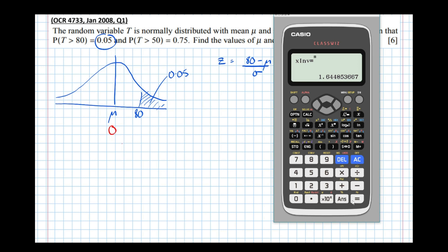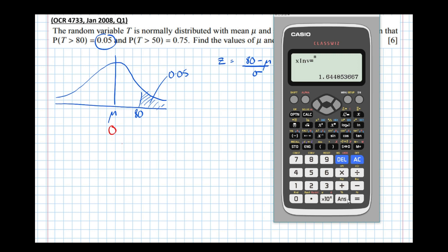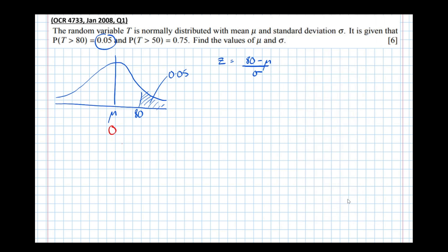Because the standard deviation of this distribution is 1, it coincides with the number of standard deviations from the mean. Using the N(0,1) distribution, we actually get as a number how many standard deviations from the mean a particular boundary is. So 1.6449 — we know that it's (80 minus mu) over sigma standard deviations from the mean, which also equals 1.6449 from the N(0,1) distribution.